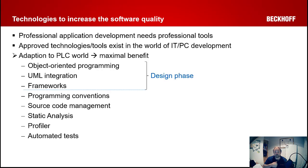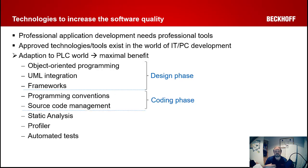When you're building a machine, in the first instance you go through a design phase of your project. You look at how you're going to actually structure your code to achieve what you want to achieve. In that design phase, considerations around tools such as object-oriented programming, UML integration, and frameworks come to the fore.